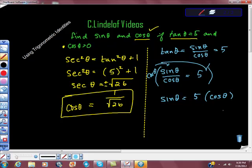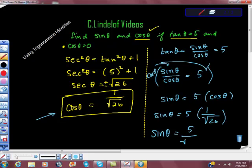And you're like, Charlie, are you going anywhere with this? I am going somewhere with this because I know what cosine theta is. So I can go back and say that sine theta is equal to 5 times 1 over the square root of 26, which we can all agree that sine theta now is equal to 5 over the square root of 26.